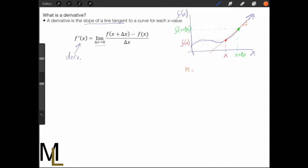m, which is normally used for slope, and if you remember from algebra, it is rise over run, or y2 minus y1 over x2 minus x1.